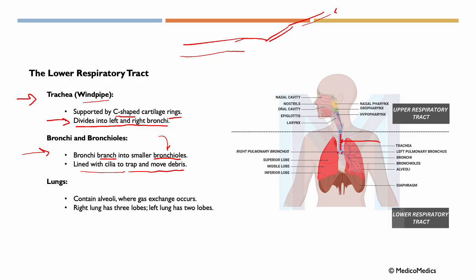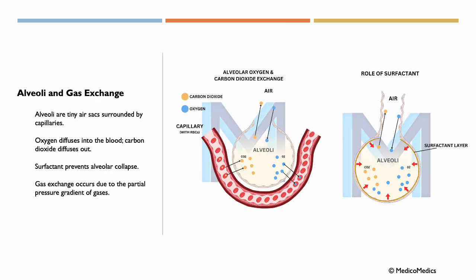The lower respiratory tract, aside from the trachea, the bronchi, and bronchioles, also includes the lungs. This is where we have alveoli, where gas exchange occurs. The right lung has three lobes. The left lung has two lobes.